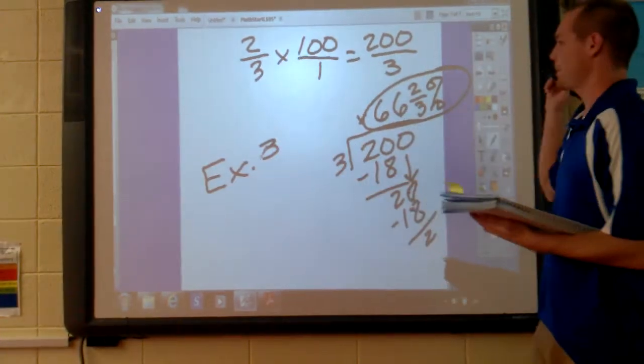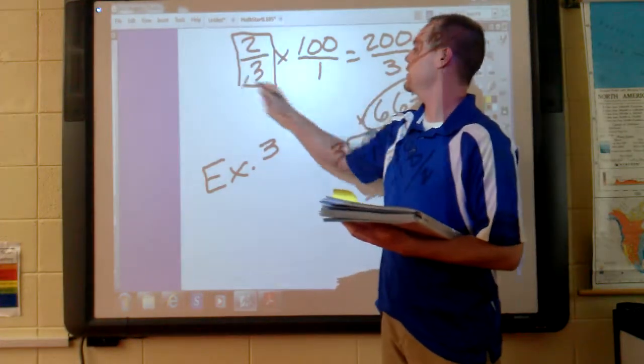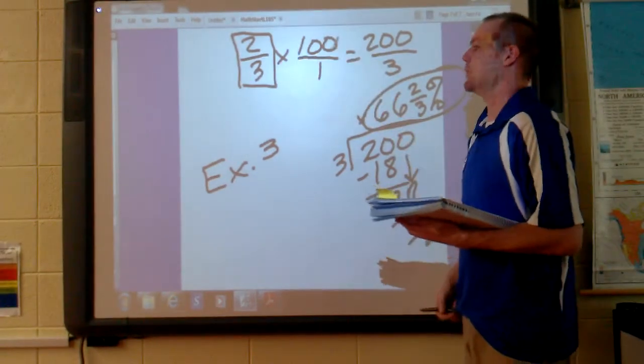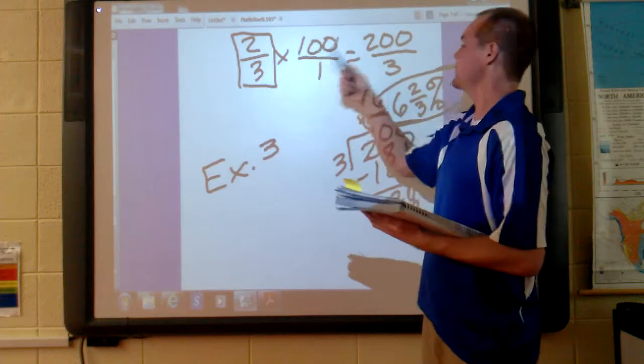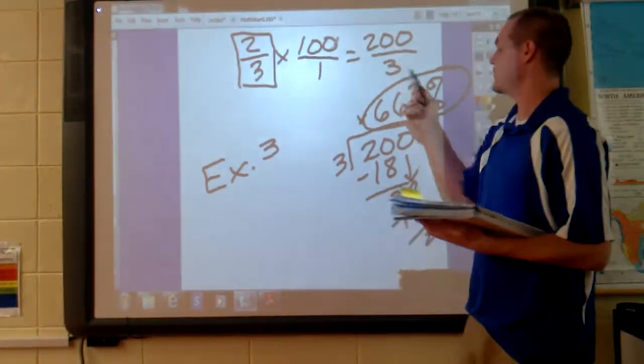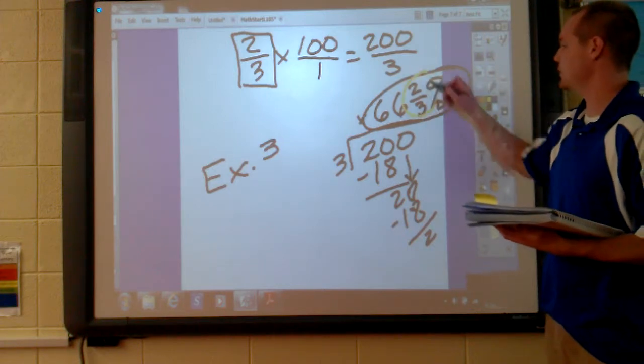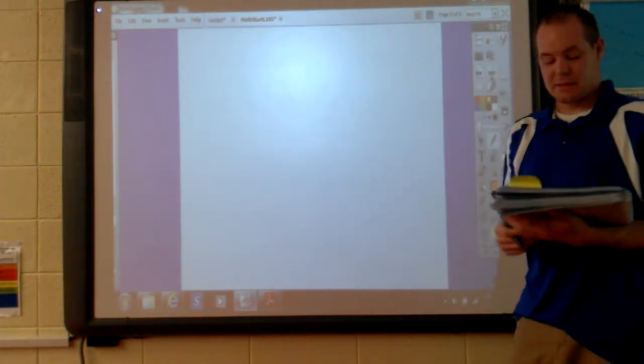So, again, when you're trying to convert fractions to percentages, you just take them and multiply them by 100 over 1. The numerator multiplies by 100 and then you divide by the denominator. 200 divided by 3 and you get your answer. Again, you are expected to simplify fractions if you can. All right.